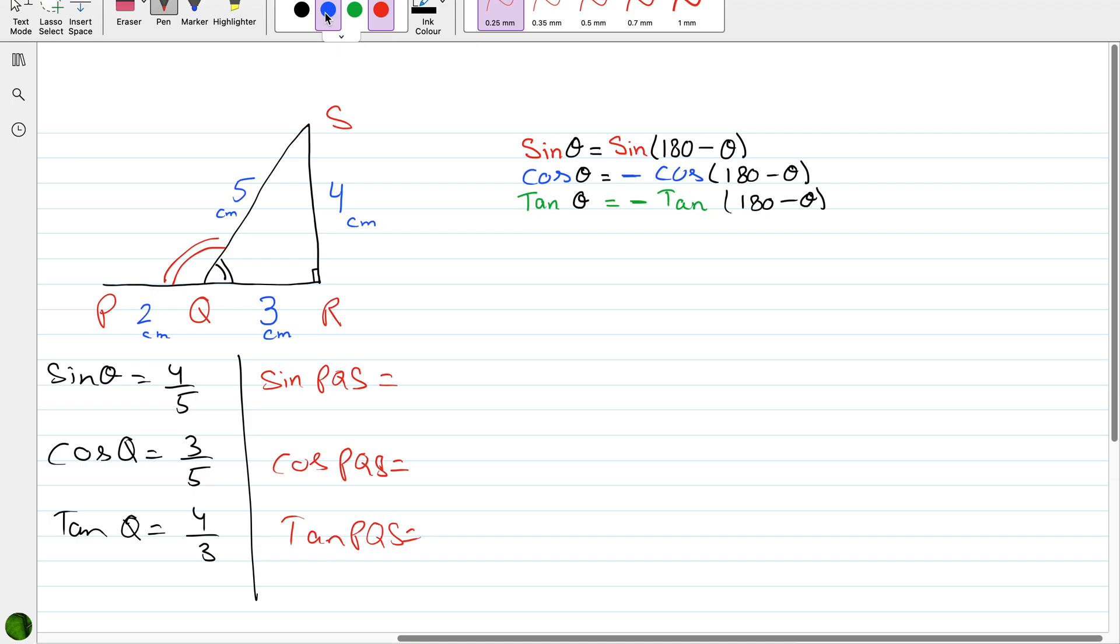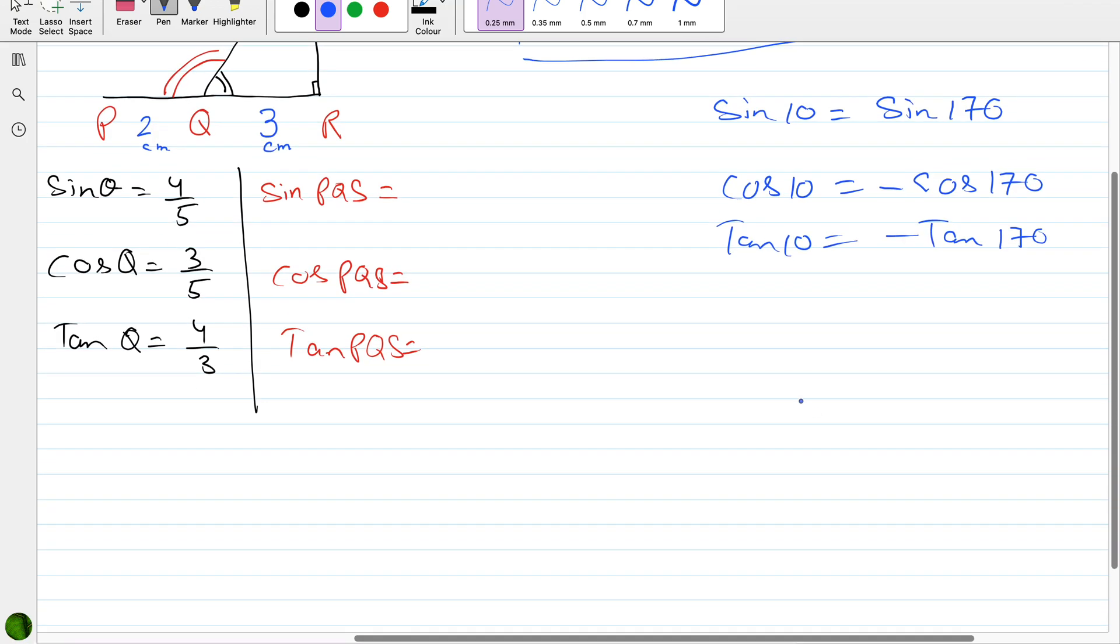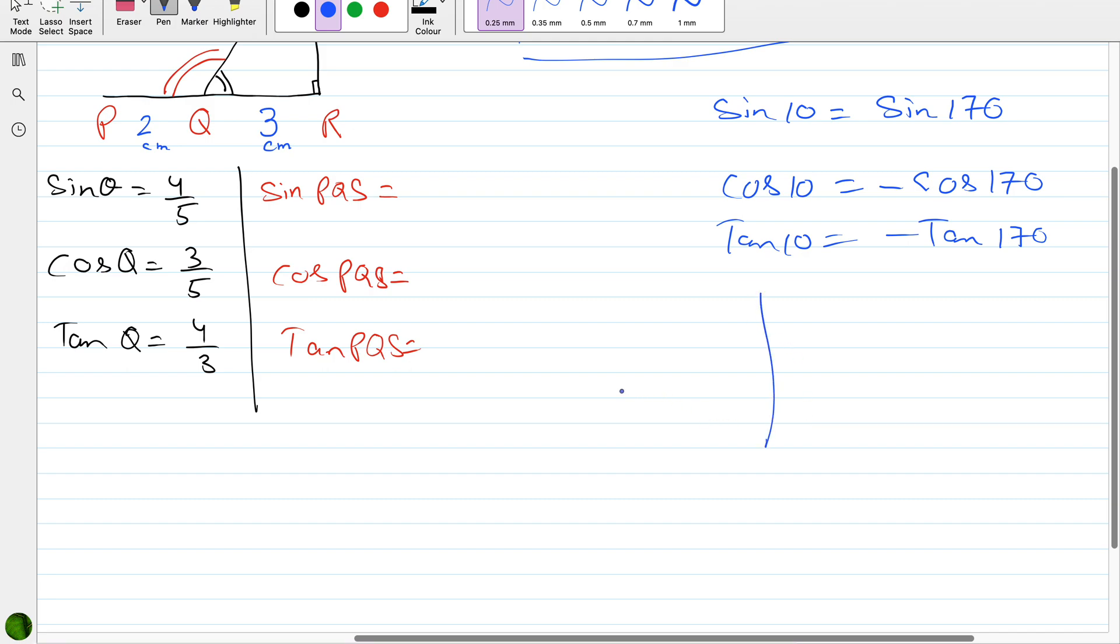Sine theta is always equal to sine 180 minus theta. What does that mean? If you check the value of sine 10 on your calculator, it would be exactly the same as sine 170. But if you go for cos, cos 10 would be equal to negative cos of 170, and tan of 10 will be equal to negative tan of 170.